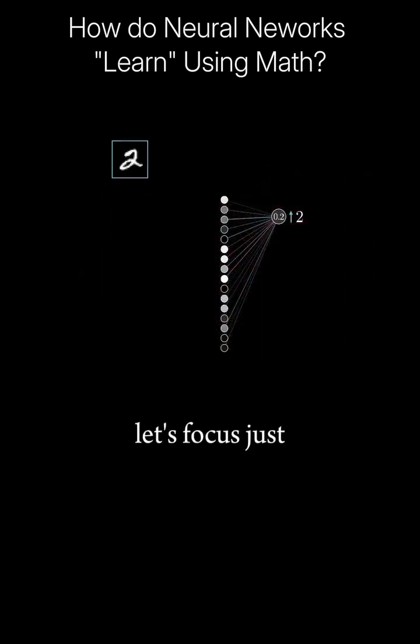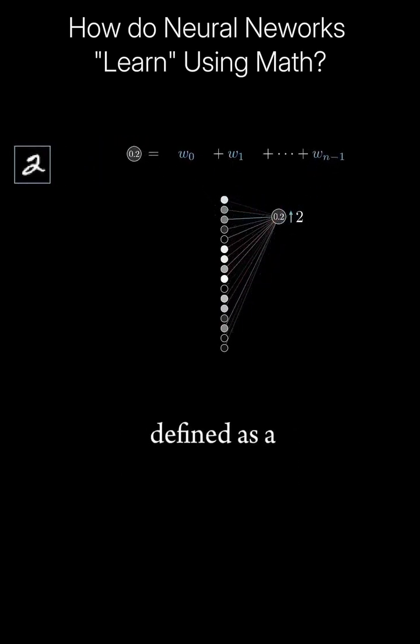So zooming in further, let's focus just on this one neuron, the one whose activation we wish to increase. Remember, that activation is defined as a certain weighted sum of all of the activations in the previous layer, plus a bias, which has all been plugged into something like the sigmoid or a ReLU.